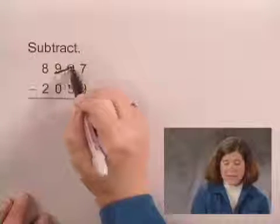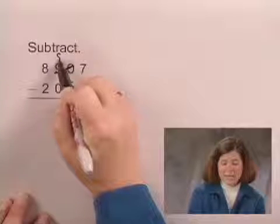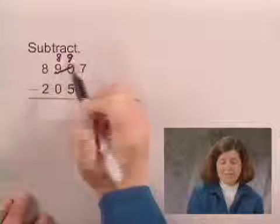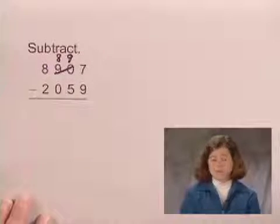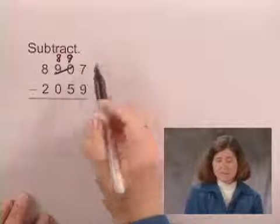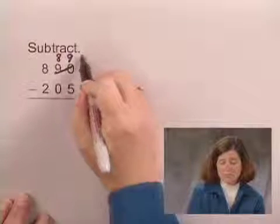The 90 tens becomes 89 tens, and the 10 that I borrow will become 10 ones. Adding the 10 ones to the 7 ones gives me 17 ones.